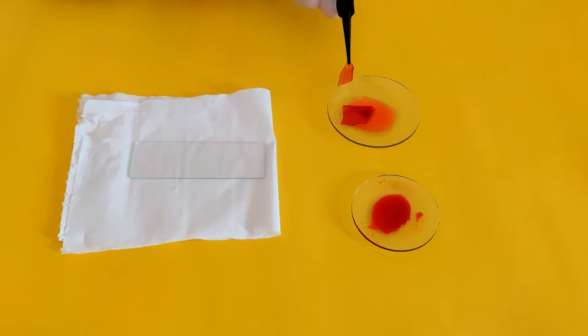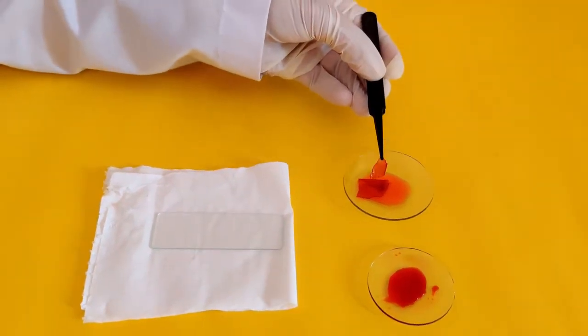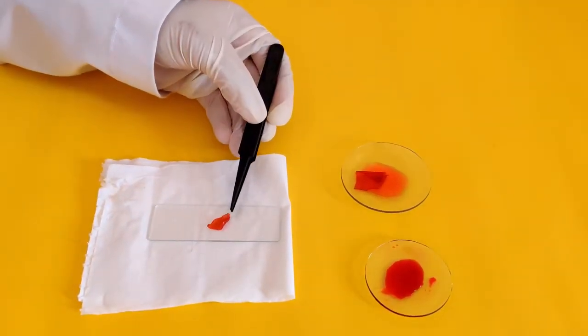Cut out a small piece of the stained tissue using scissors and carefully place it on the glass slide.